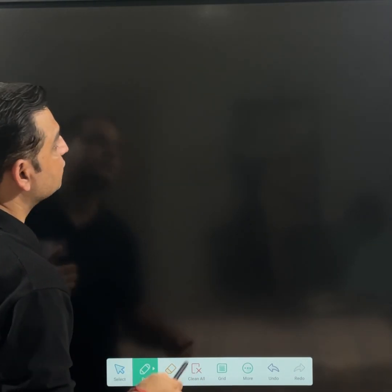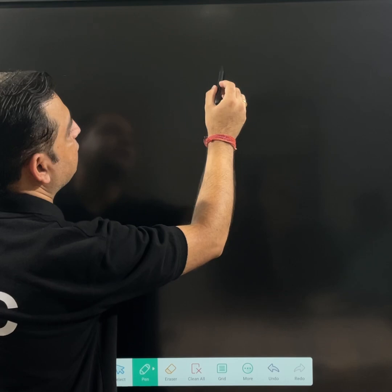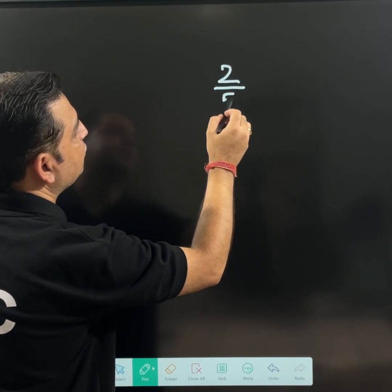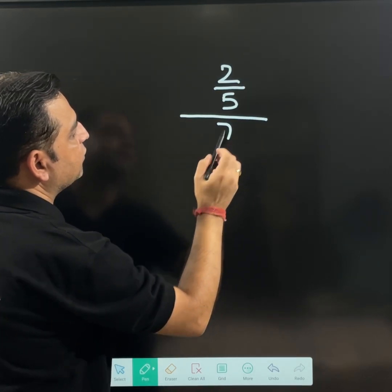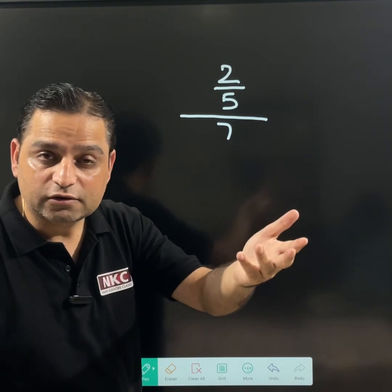So let us just see one more question for practice. I hope you all will be able to do it. Let us suppose 2 over 5 over 7. This is the question. You try to do it yourself.